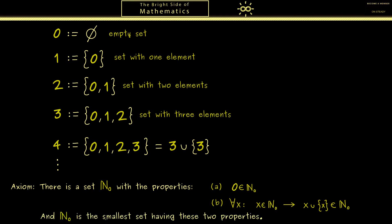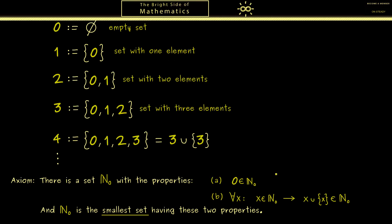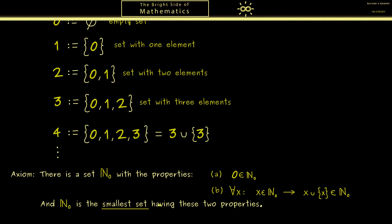However to finish our axiom here we also have to say that N_0 is the smallest set that has these properties. This simply means that any other set with these two properties is a superset of N_0. Okay and with this we finally have the natural numbers in our set theory.